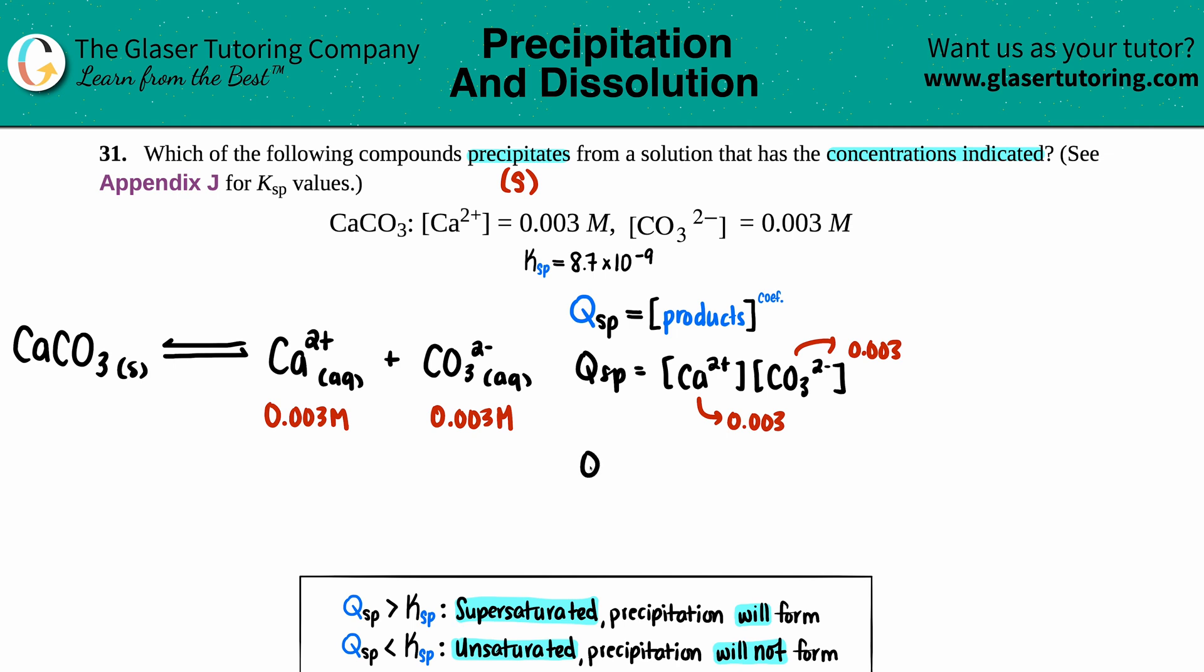Qsp equals the two numbers: 0.003 times 0.003. I'm going to plug it into the calculator. Let's see what we get. Qsp equals 0.003 times 0.003. I get 9 × 10⁻⁶.